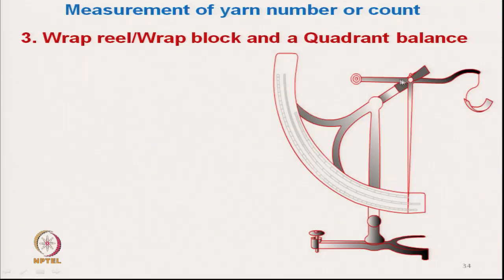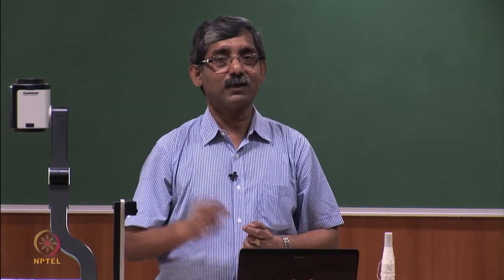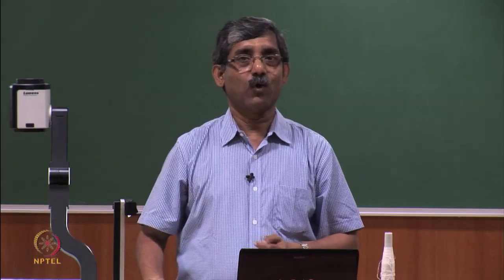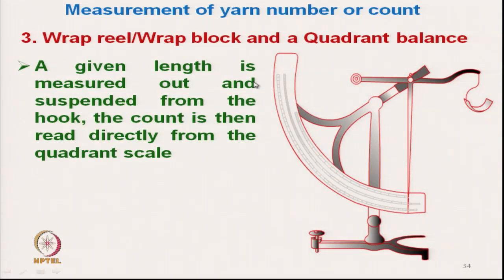Another system is called the quadrant balance, from which we can directly get the count. This was used earlier but is no longer in common use. In this system, a given length is measured out — typically 120 yards for yarn, with specific lengths for sliver and roving. So this system can measure count for yarn, sliver, or roving.